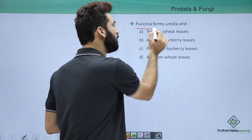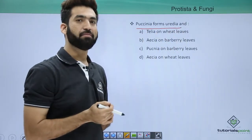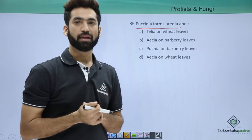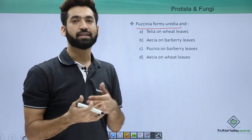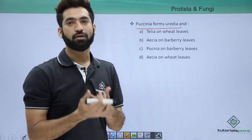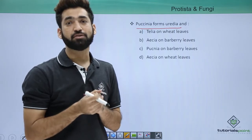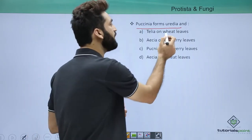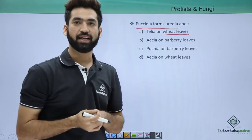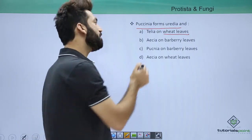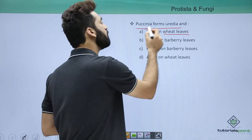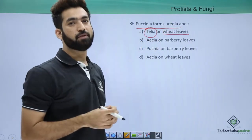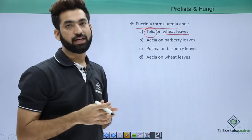Puccinia forms uredinia. In the Puccinia life cycle, when it infects wheat, it produces two types of spores on the wheat leaves: it makes uredinia (uredospores) and also telia (teliospores). So both uredospores and teliospores are formed on wheat — remember this.